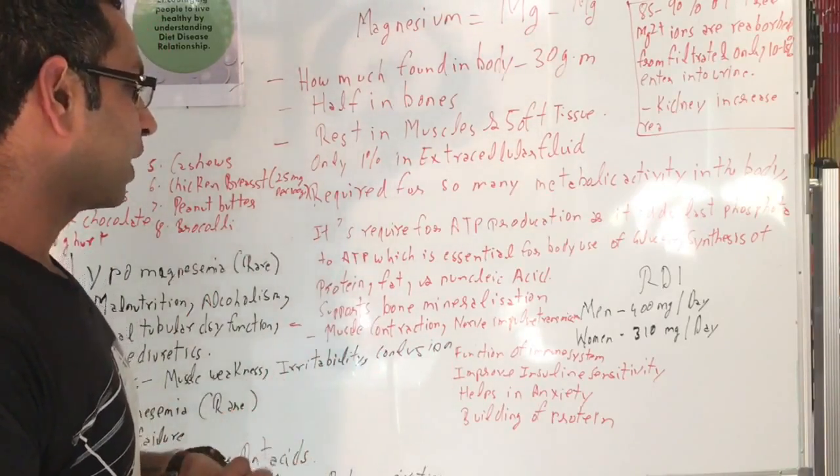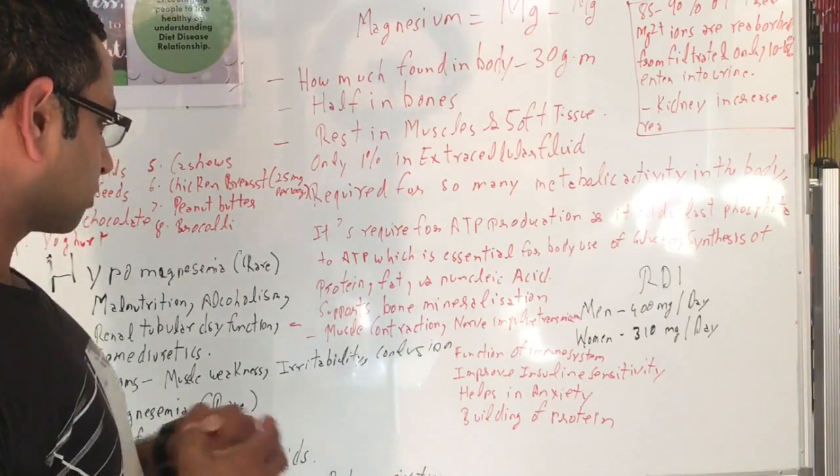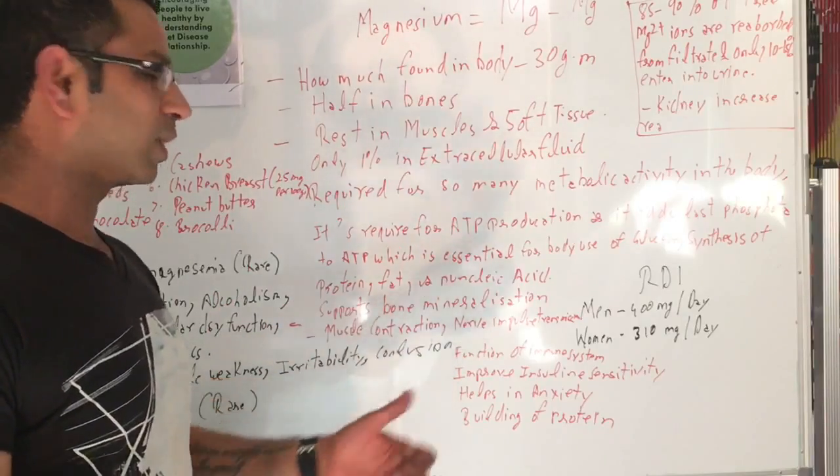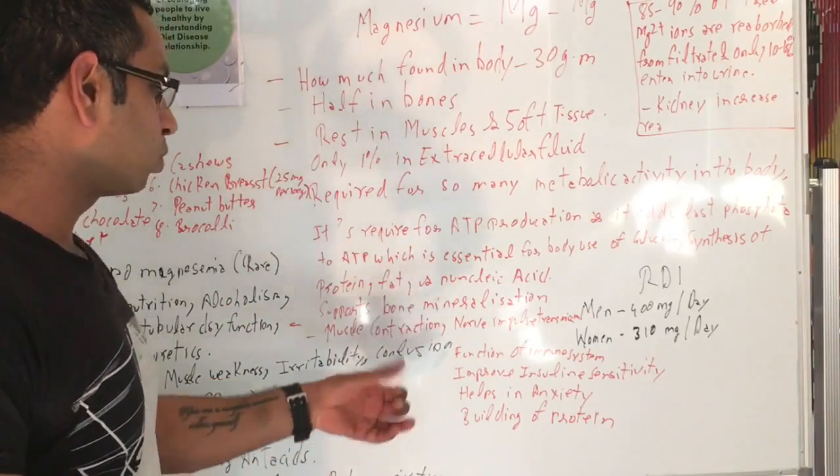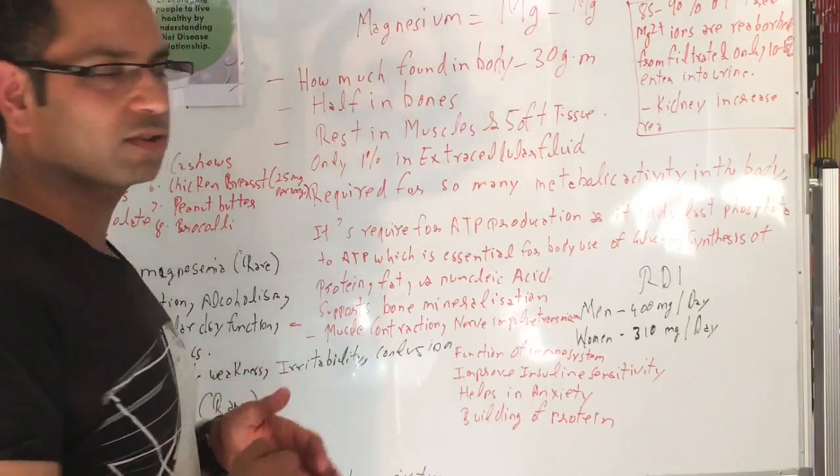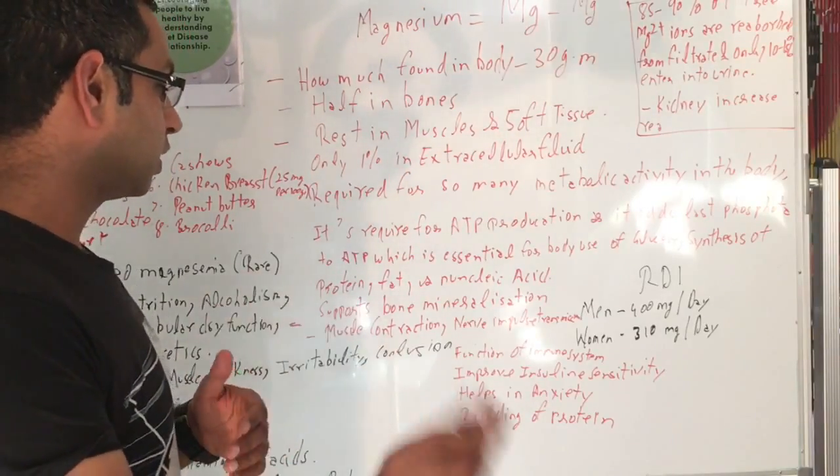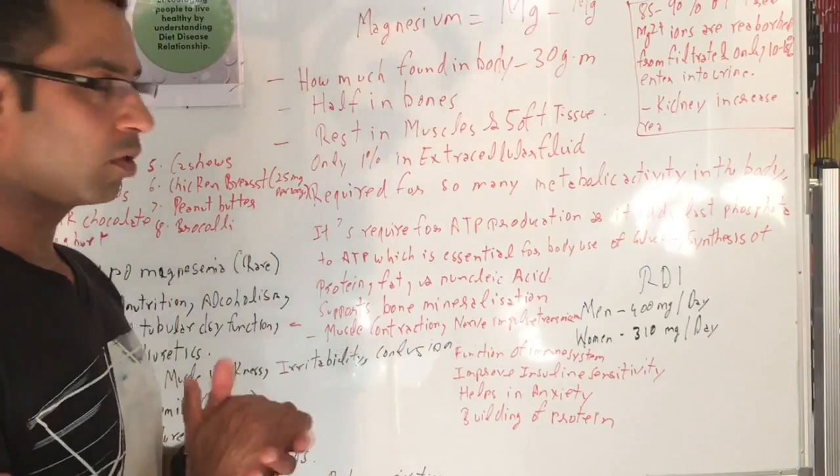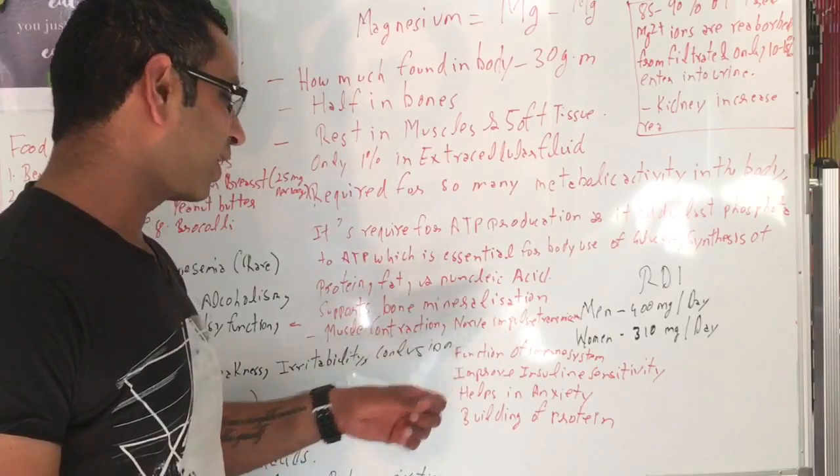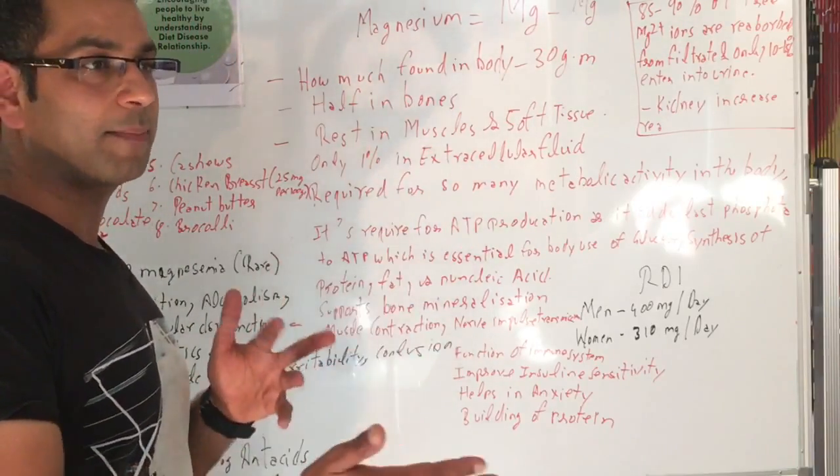It's required for immune function. It improves insulin sensitivity. What they found is that people who are deficient in magnesium have more chances to have diabetes because the body becomes more easily resistant. So it improves insulin sensitivity, and what they found is that people with diabetes...